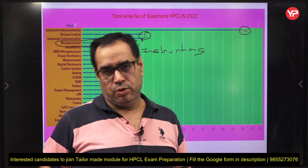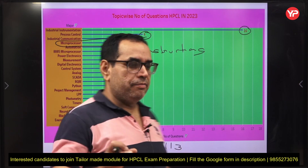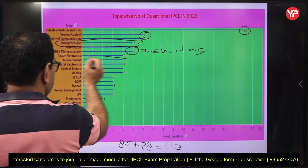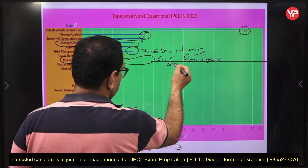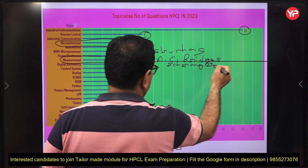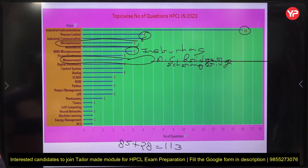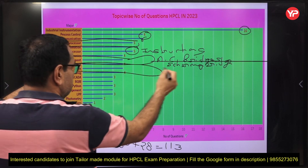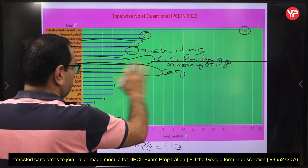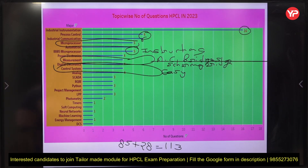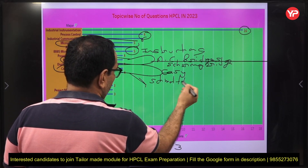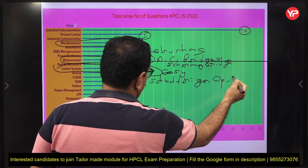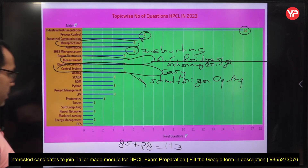Power electronics is your choice if you have time. Electrical measurement is important — mainly AC bridges, especially the Schering bridge. Control system is easy — don't skip it, there are 4 questions on linear control system. For analog electronics, mainly focus on Schmitt trigger and op-amp; don't go into the detail of the entire analog subject.